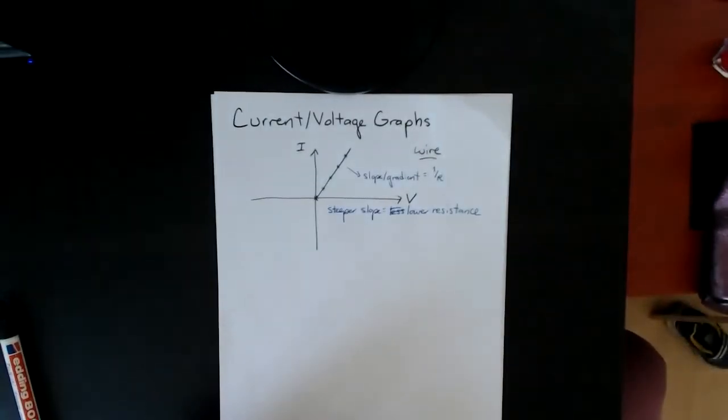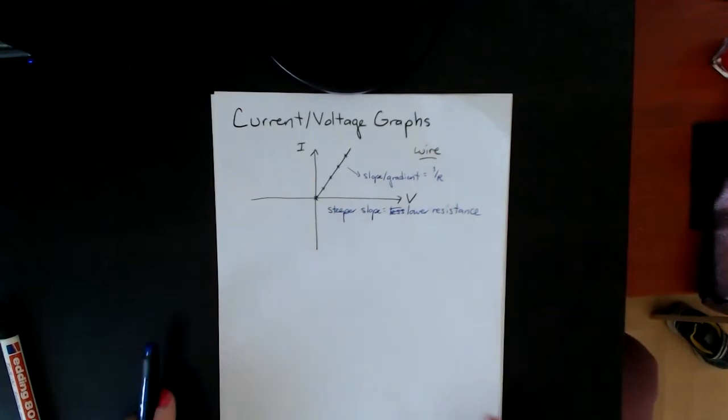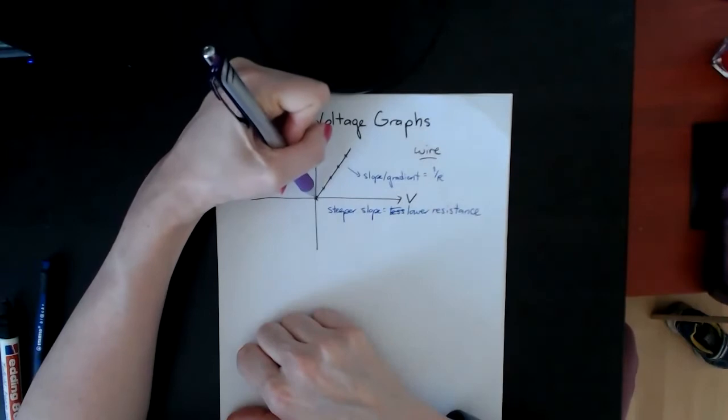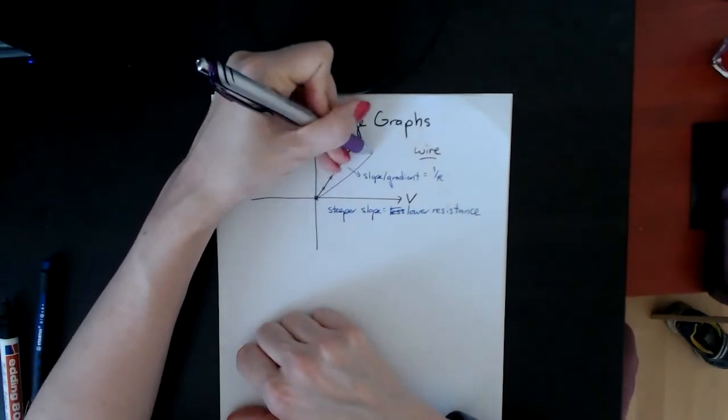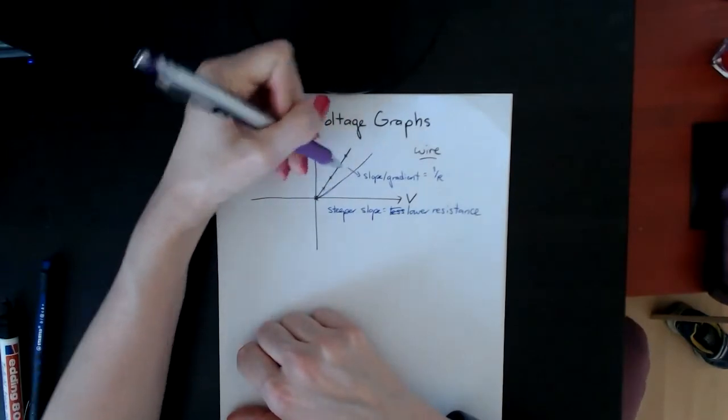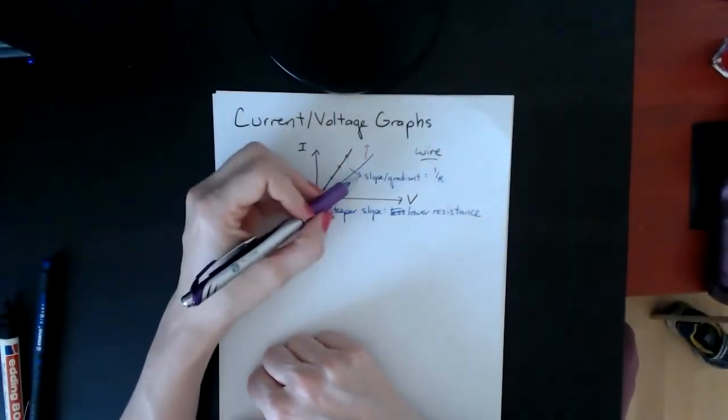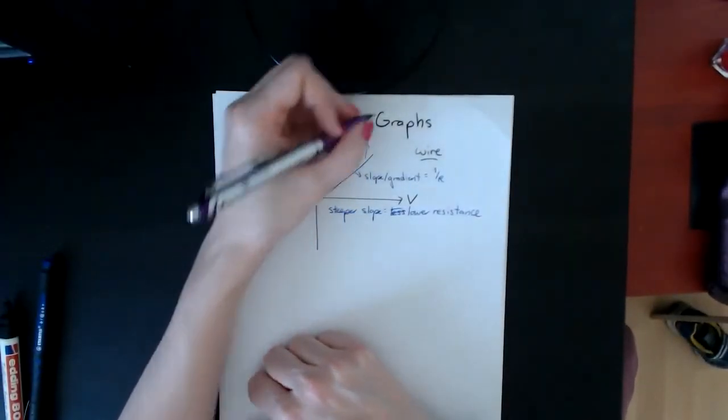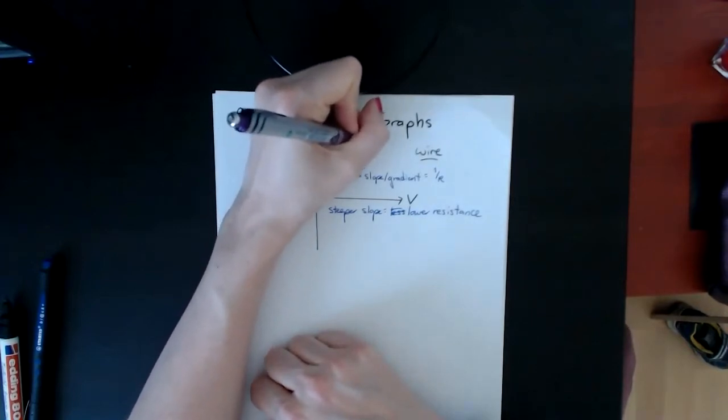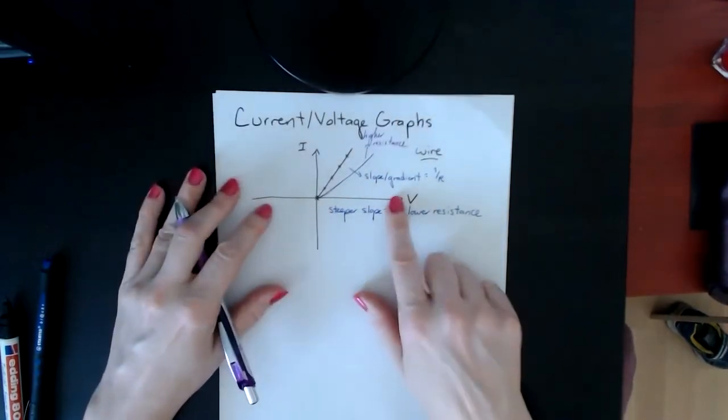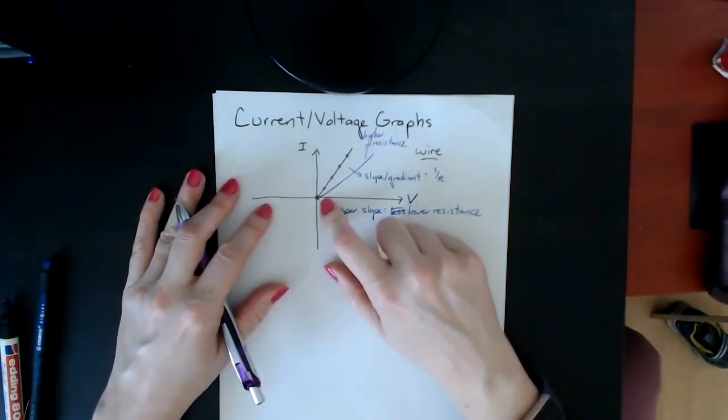If I were to take another, maybe thinner wire, I would find that maybe its line looks like this. That's supposed to be a straight line—pretend that it is. The slope here is lower, which means this actually has higher resistance.